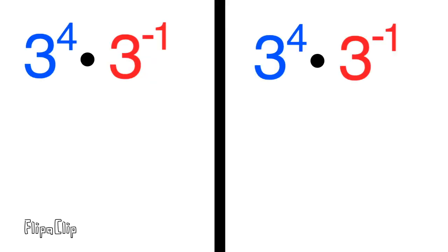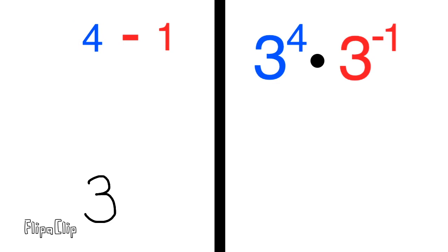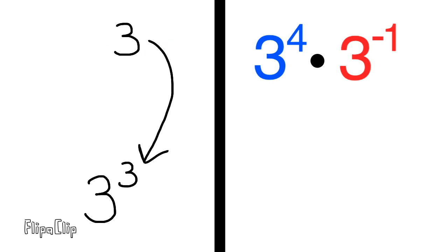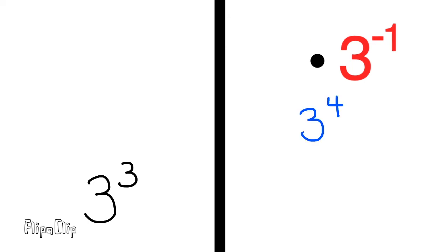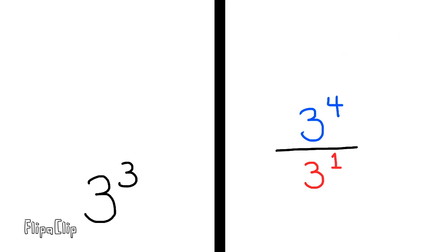Let's take a look at two methods side by side. Three to the power of four times three to the power of negative one. They have the same base number, three, and we add the exponents — in this case we're adding a negative one. Four minus one is three, so the exponent is three. Now for the right-hand side: we'll put the positive exponent on top, three to the power of four, and we'll move the term with the negative exponent to the bottom, remembering to change the exponent to a positive. The fraction reads three to the power of four divided by three to the power of one. The exponent on top minus the exponent on the bottom equals three, so just like the left side, we have three to the power of three.